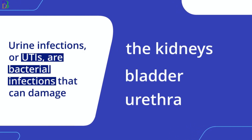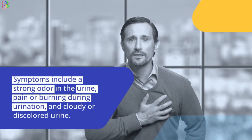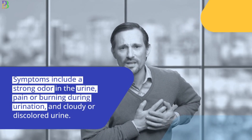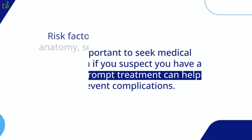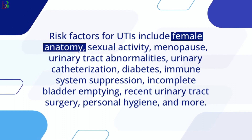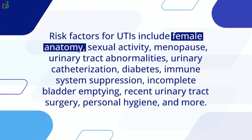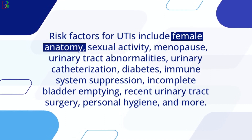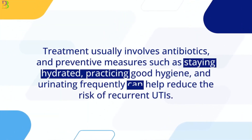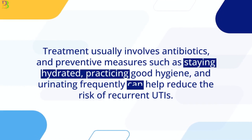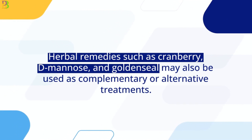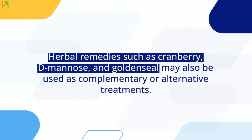In summary, urine infections or UTIs are bacterial infections that can damage the kidneys, bladder, and urethra. Symptoms include strong-smelling, cloudy, or discolored urine and pain during urination. Treatment usually involves antibiotics, and preventive measures such as staying hydrated, practicing good hygiene, and urinating frequently can help reduce the risk of recurrent UTIs. Herbal remedies such as cranberry, D-mannose, and goldenseal may also be used as complementary or alternative treatments.